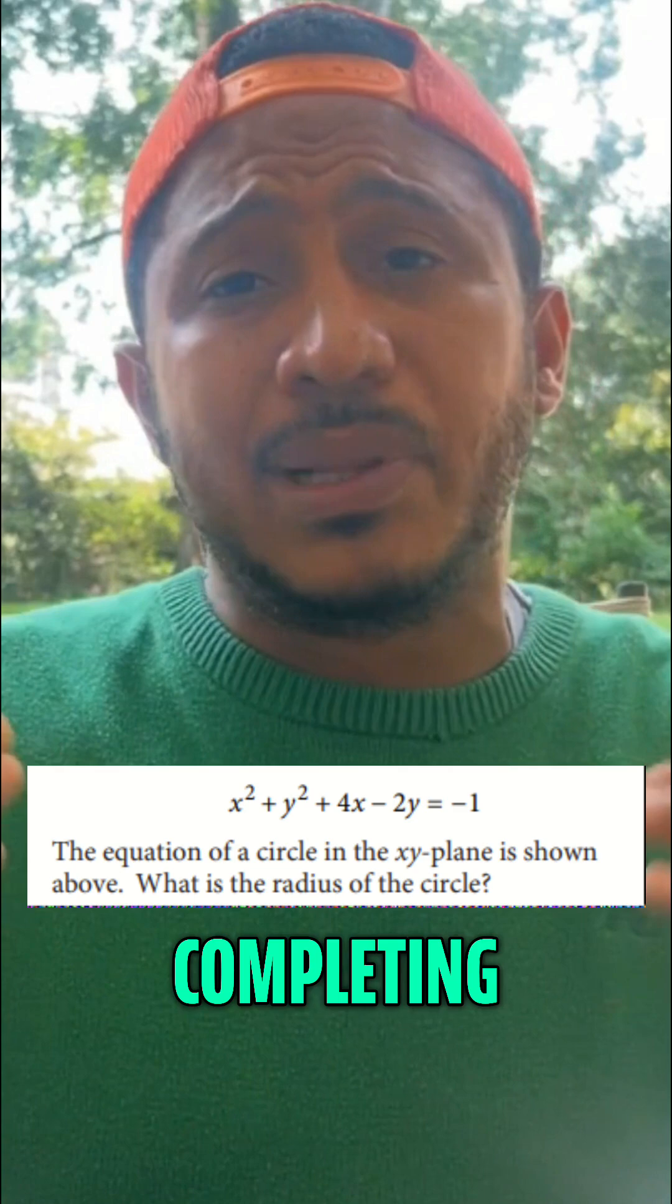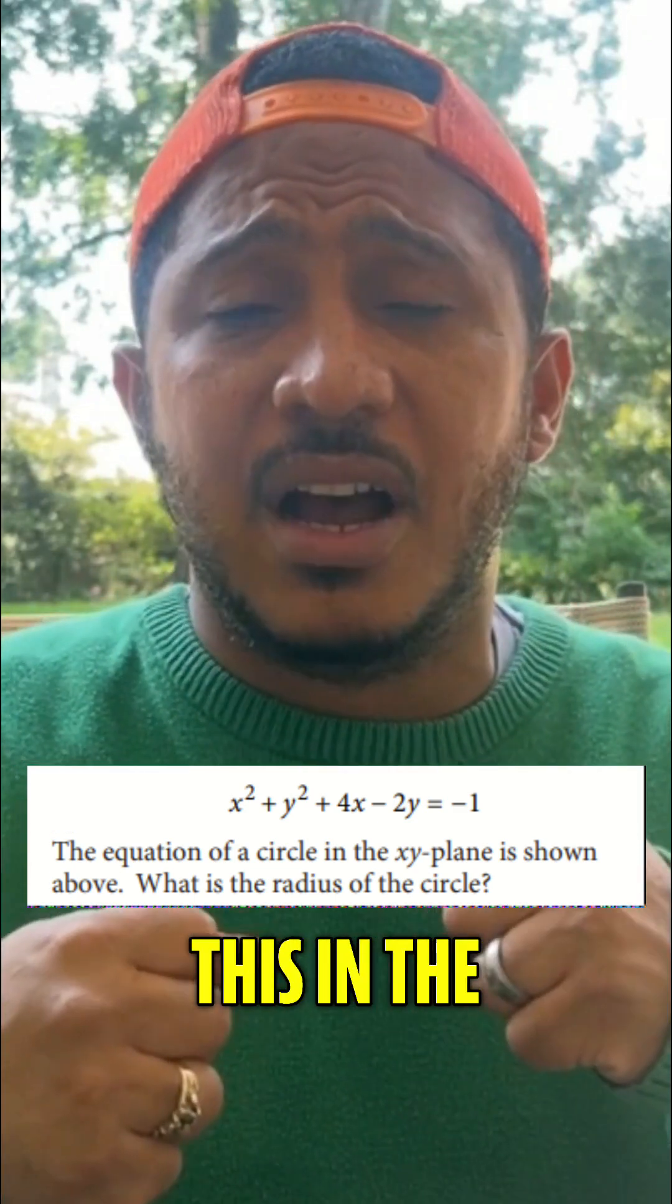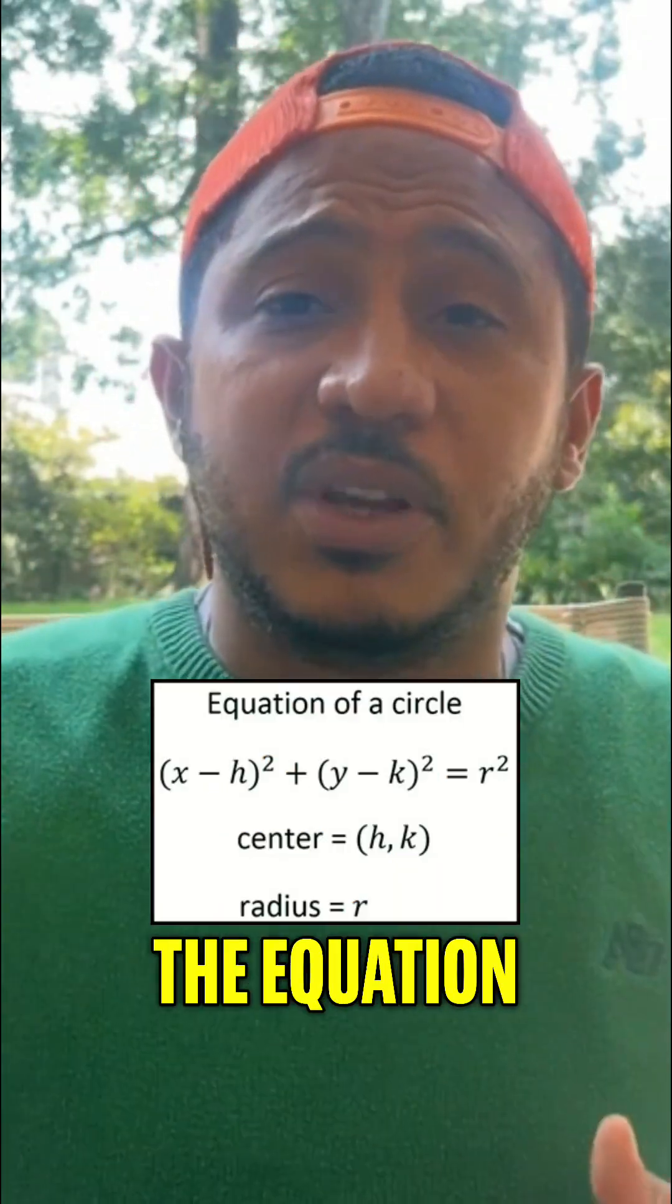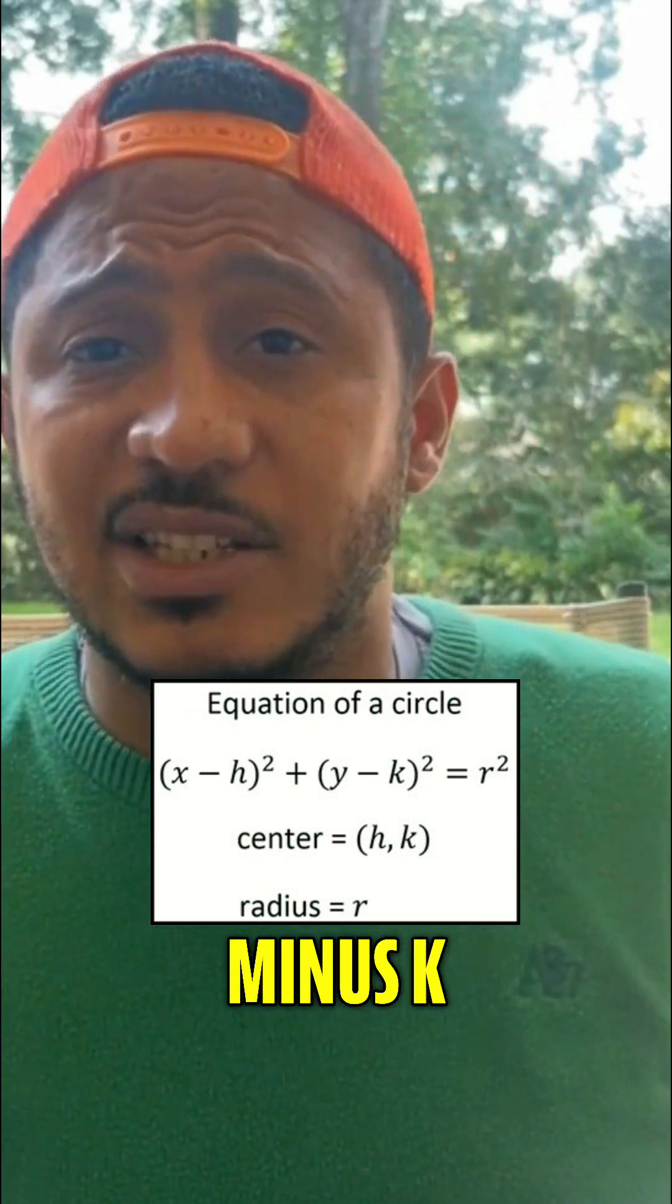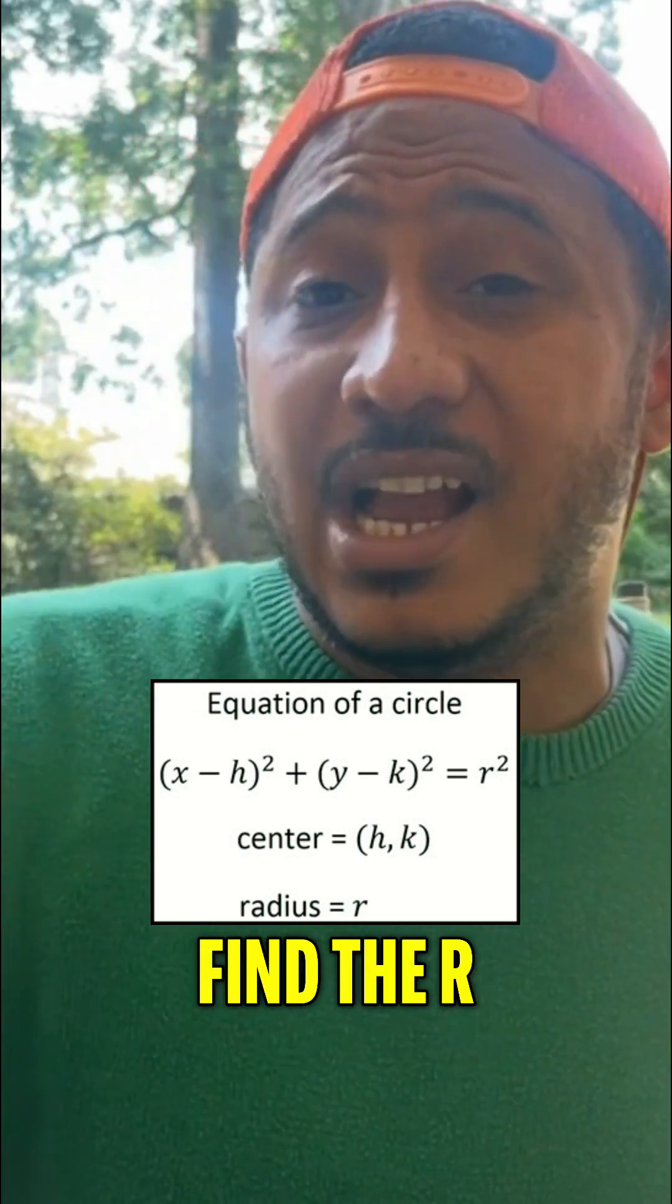So how we find that out is by really completing the square. We need to put this in the standard form of the equation of a circle. So the standard form of the equation of a circle is x minus h squared plus y minus k squared equals r squared. So we need to find the r here.